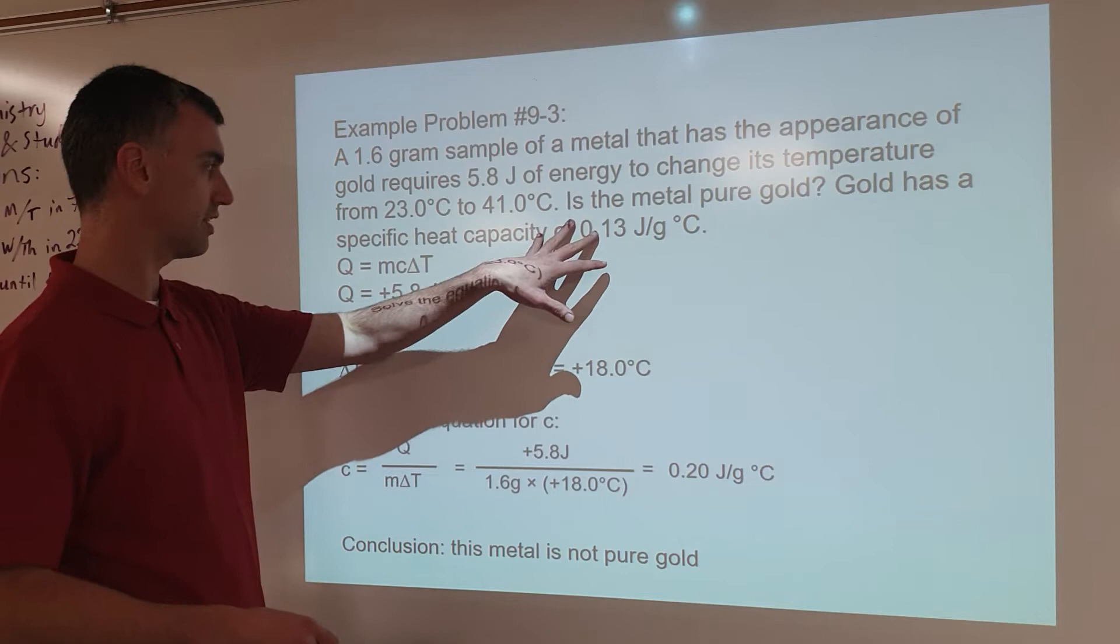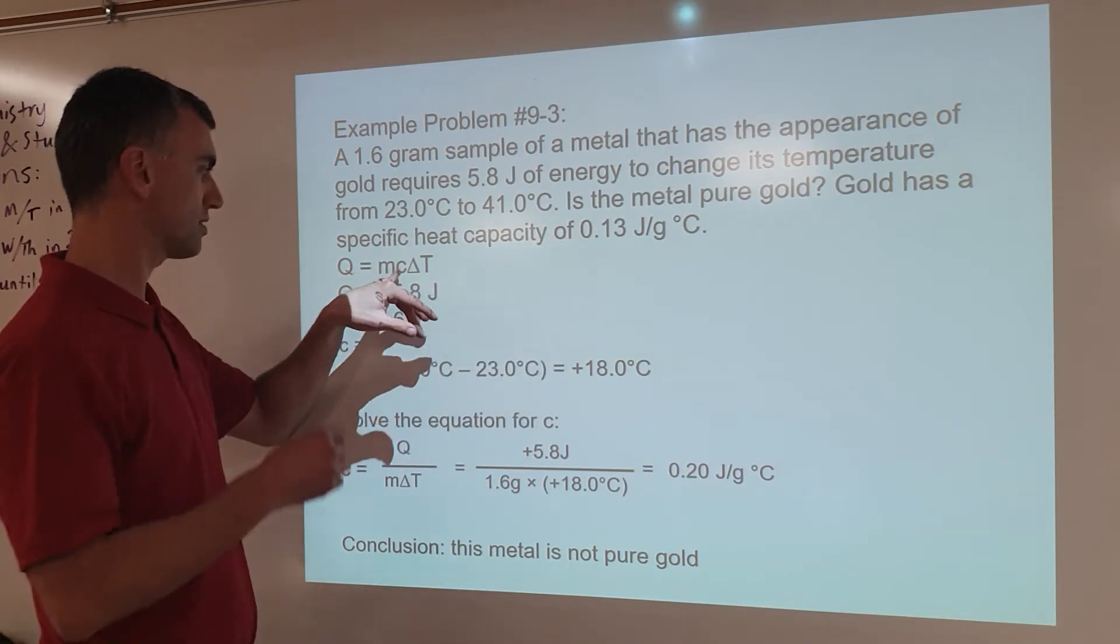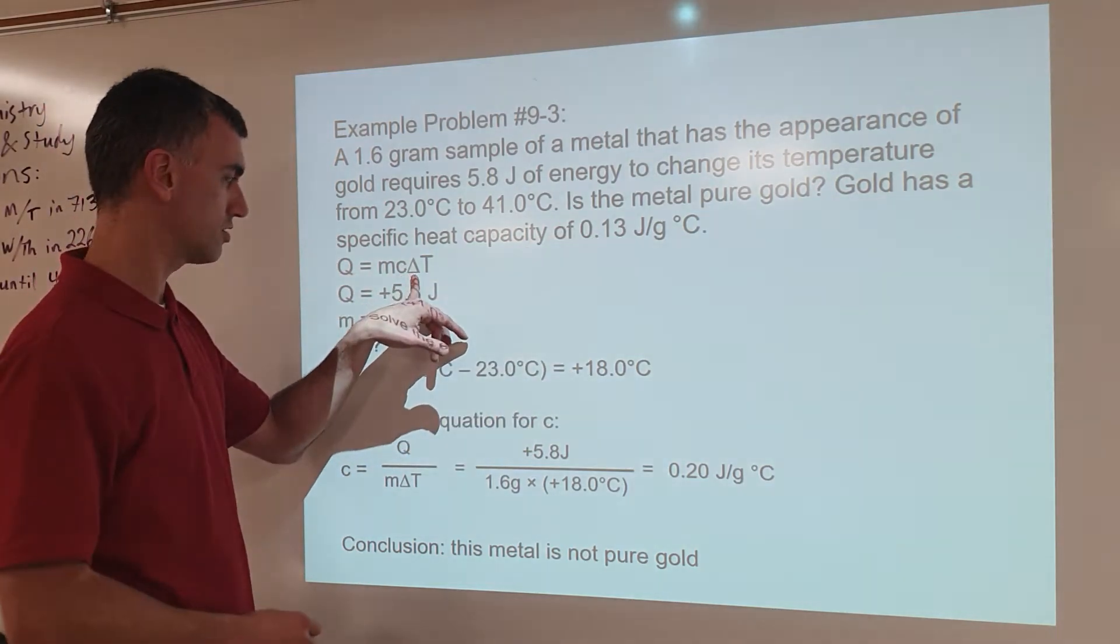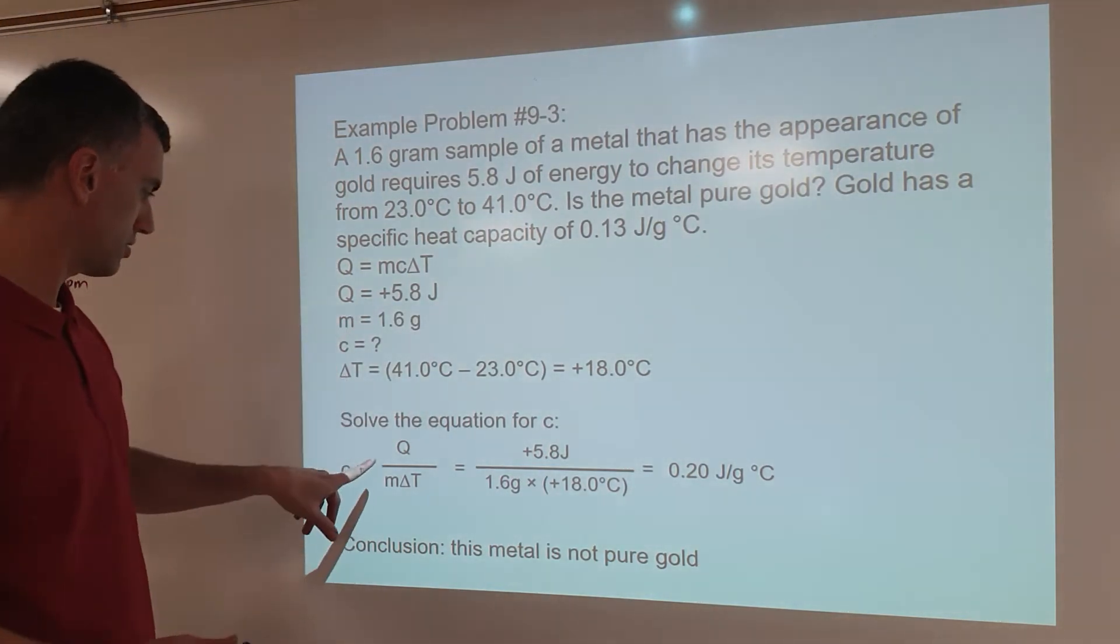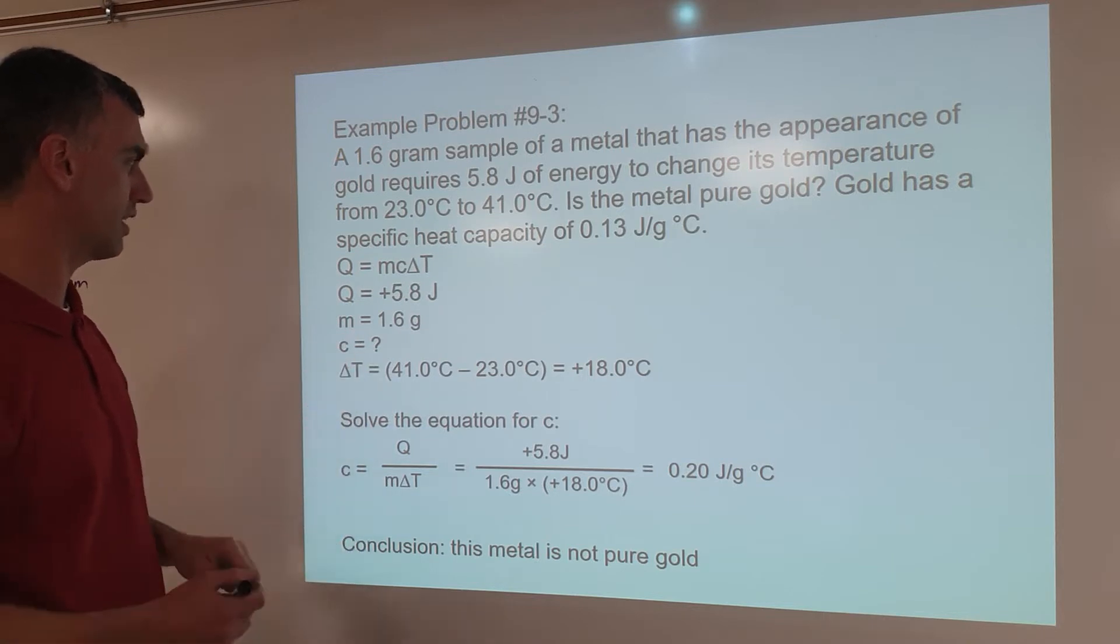So this thing here has us taking the equation Q = mcΔT and using that to solve for specific heat capacity. Now it shows this here. Now how did we get from here to here? Let's just be aware of what happens.